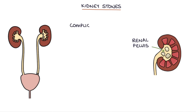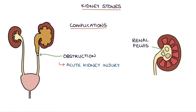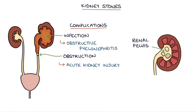There are two key complications to kidney stones. The first is obstruction, which can lead to an acute kidney injury because urine can't drain away from the kidney, causing back pressure into the kidney affecting its function. The second is infection with obstructive pyelonephritis — infection in the kidney caused by obstruction — so that infective matter builds up in the kidney tissue.